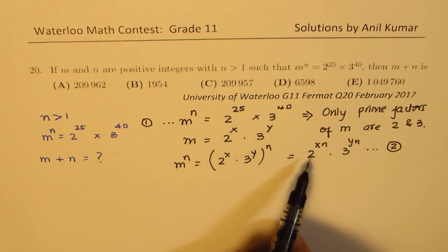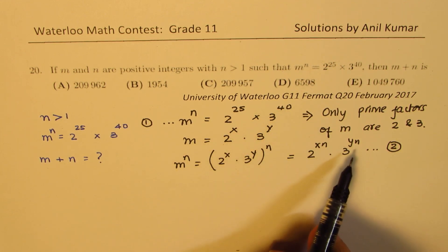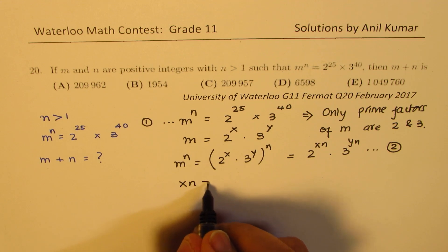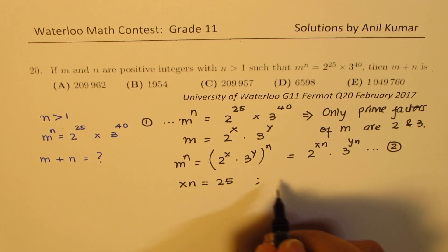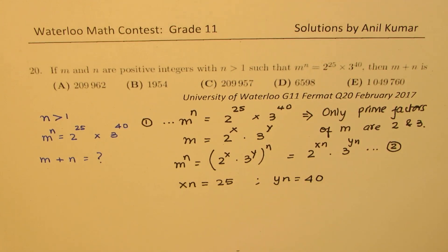Now, we can compare the given equation, which let me call this as equation number 1 and this as our equation number 2. So when you compare these two equations, exponents of 2 are 25 here it is xn, for 3 it is 40 and yn. So that means we get two equations: xn is equal to 25, and we also get yn equals to 40.